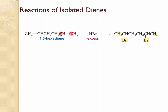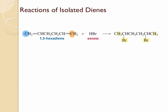Between these two carbons, this is the carbon having more hydrogens, and therefore this is where the hydrogen from the protic acid is going to go, and the Br is going to get added to the other carbon. Now on the other double bond, between these two carbons, this is the carbon with the most hydrogens, so the hydrogen goes on to this carbon and the Br goes on to the other carbon.